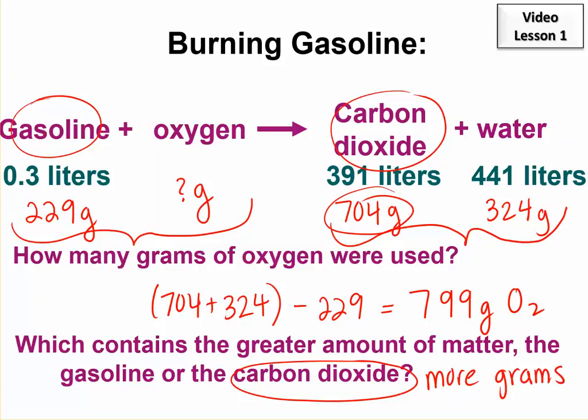Now it doesn't matter really that the volume is much larger for carbon dioxide. That really doesn't necessarily indicate the amount of matter. Why is the volume of carbon dioxide so large compared to the volume of the gasoline? It has to do with the state of matter. The gasoline is probably a liquid, and so it occupies less space. In a gas, the carbon dioxide molecules are really spread apart, so it occupies more volume. And that's our next topic, the state of matter.